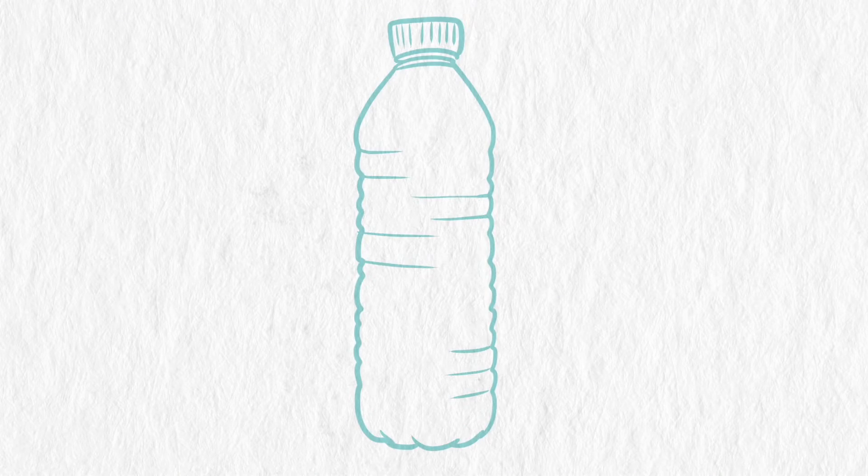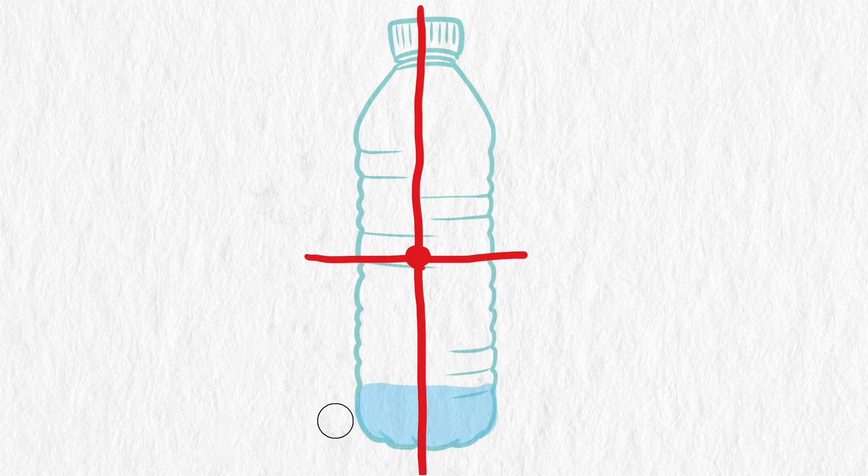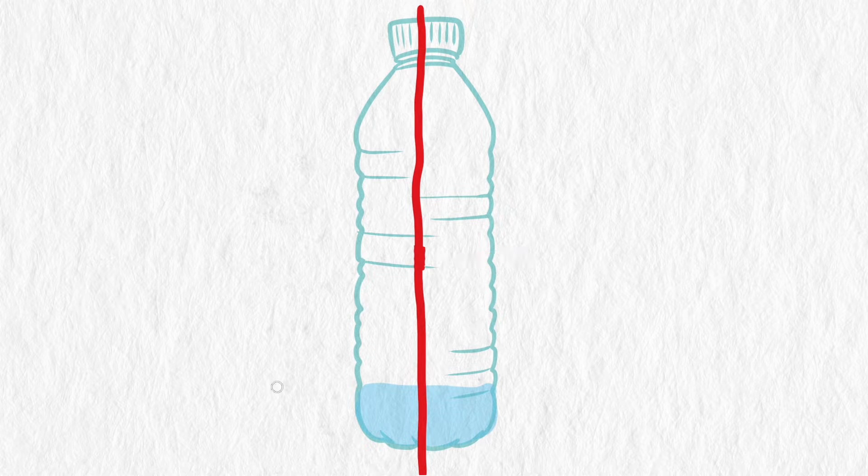There are two main reasons the amount of water matters when flipping a bottle. The first is that the water can lower the center of gravity of the bottle. The lower the center of gravity, the harder it is to tip over.